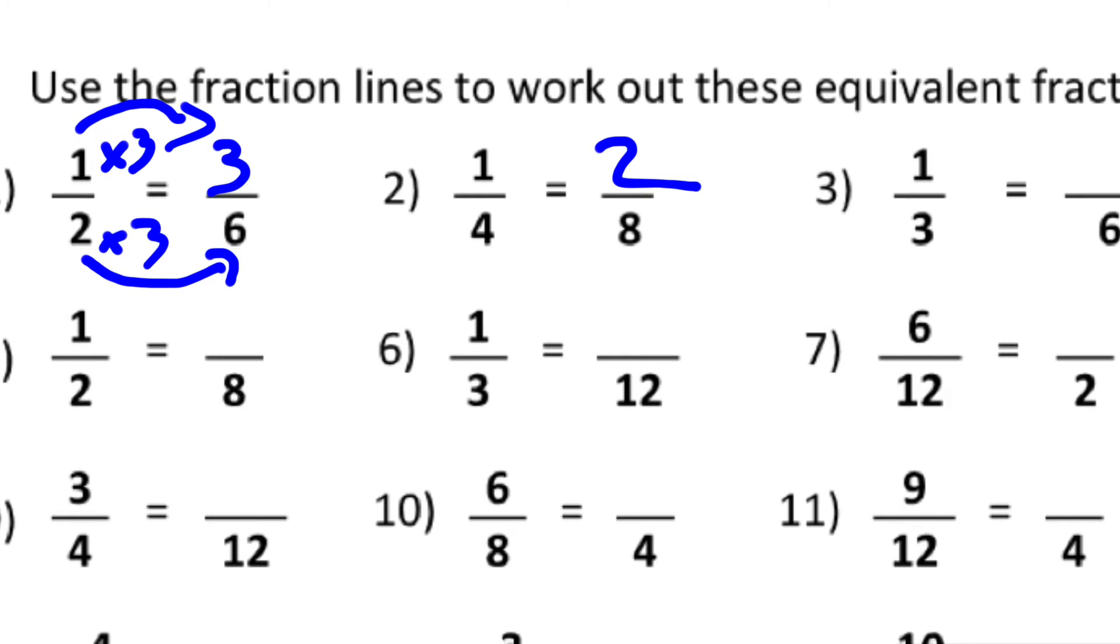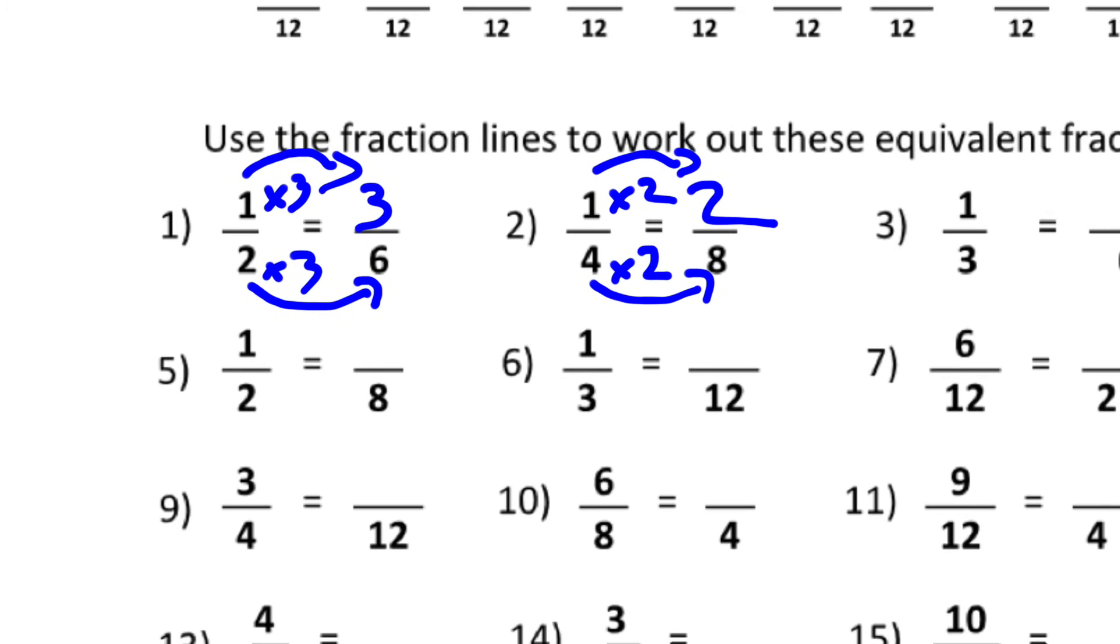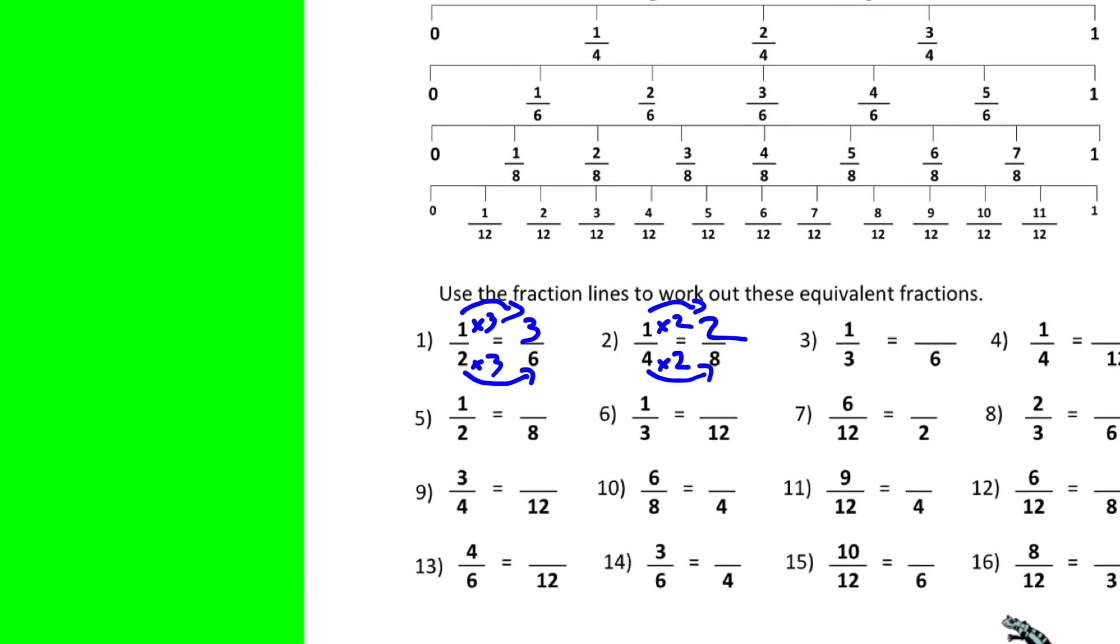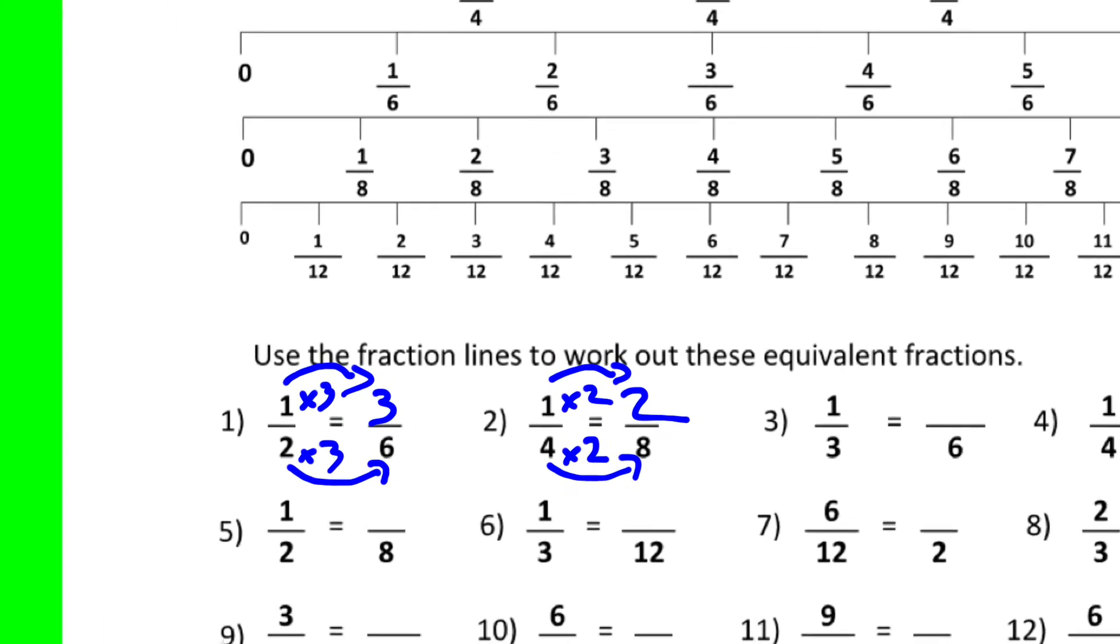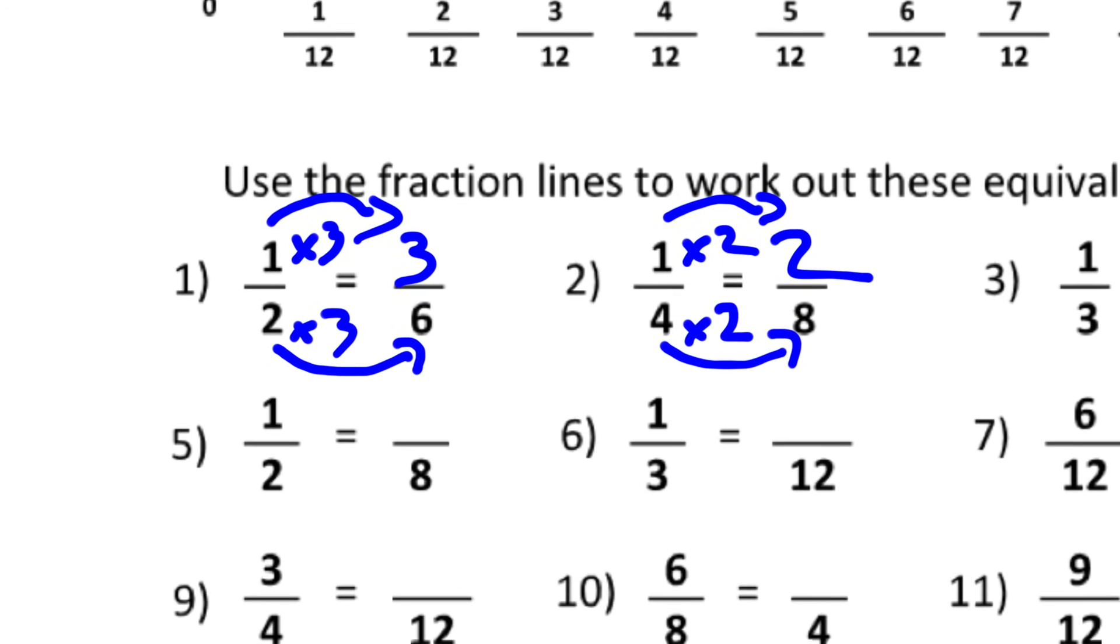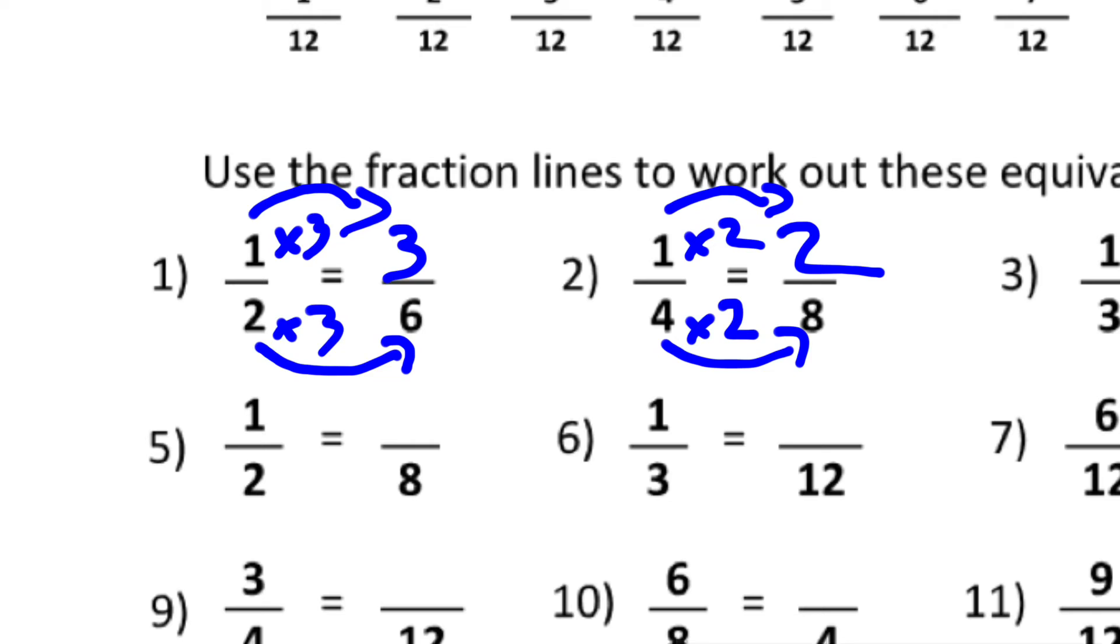And the same thing here. What do I multiply by 4 to get 8? I times 2. And then since they're equivalent, I would do the same thing to the top and 1 times 2 is 2. So that's what we were working on yesterday with the pictures. Today, we've transitioned to no pictures, just using multiplication.